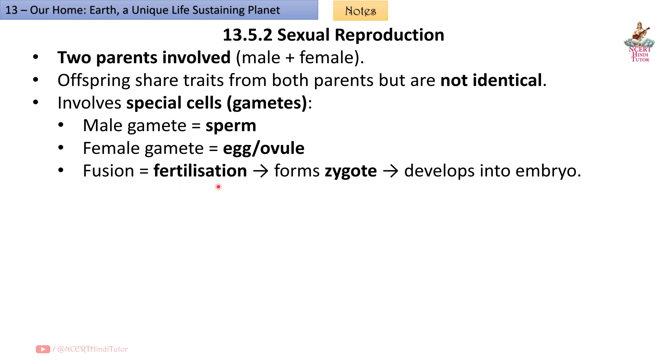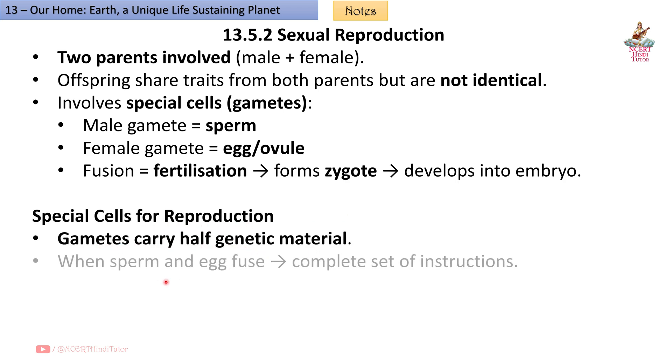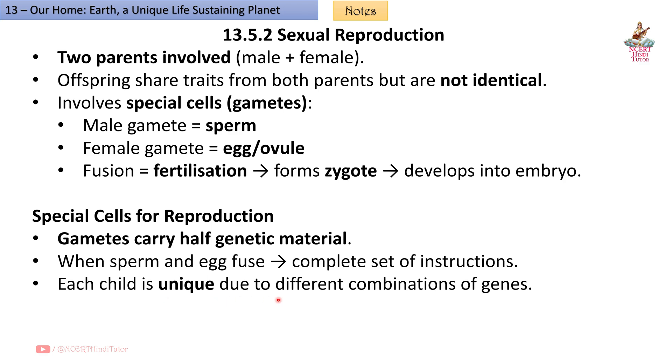Fusion (fertilization) forms a zygote, which develops into an embryo. Gametes carry half the genetic material. When sperm and egg fuse, they create a complete set of instructions. Each child is unique due to different combinations of genes.